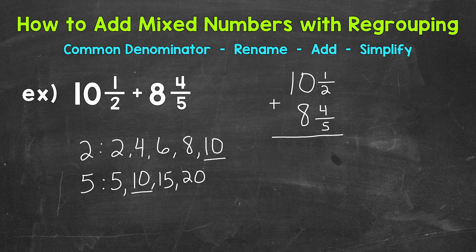Therefore, the least common denominator for 2 and 5. So what we need to do now, we need to rename our fractional part of these mixed numbers so they have that common denominator of 10. Then we can add.